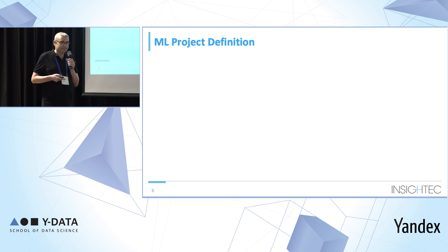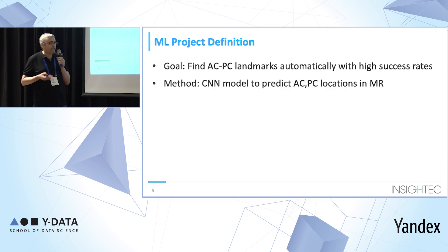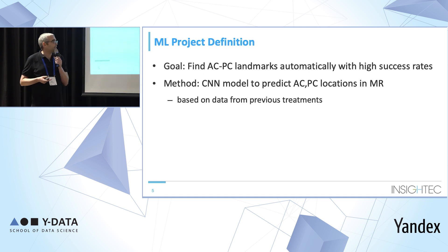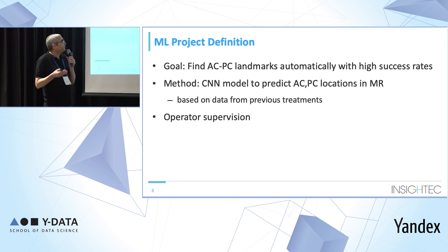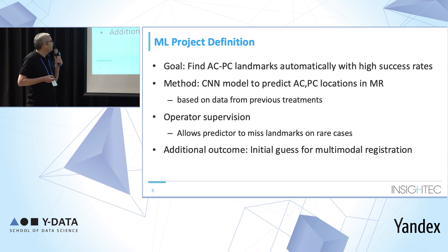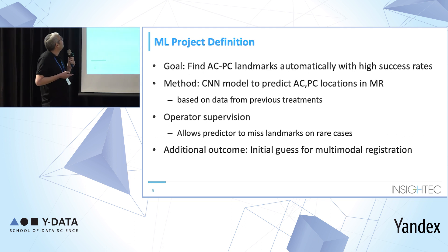Looking at it as an ML project, we want to find the landmarks automatically with high success rates. The method is to create a CNN model to predict these landmarks using data from previous treatments. The process is supervised by the operator, so in very difficult rare cases, if we don't find the AC and PC automatically, it's acceptable as the user will fix this. There is an additional outcome: the landmarks may be used as an initial guess for multimodal registration, for example with CT volume.